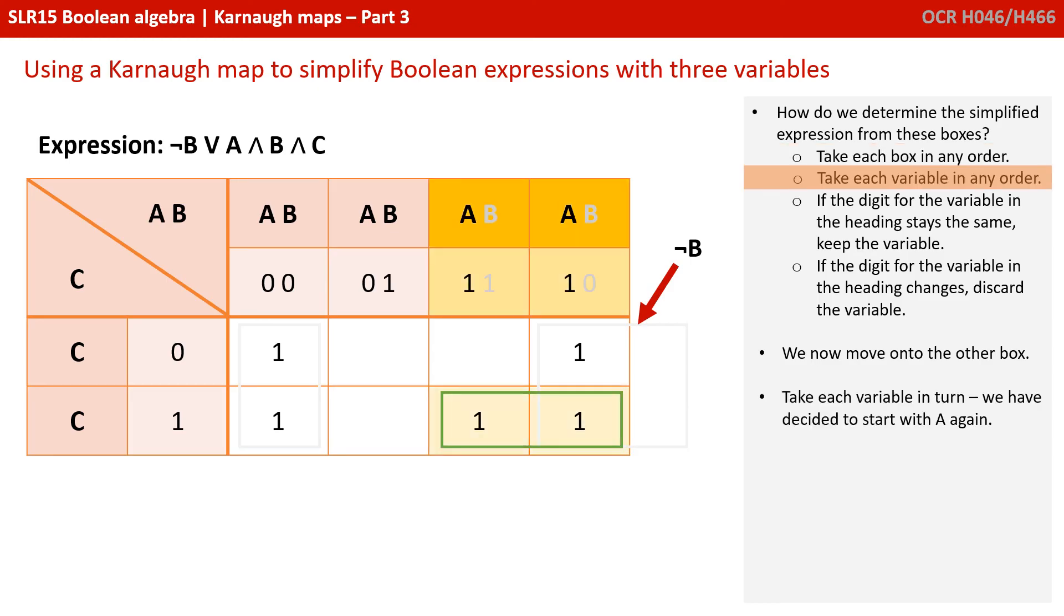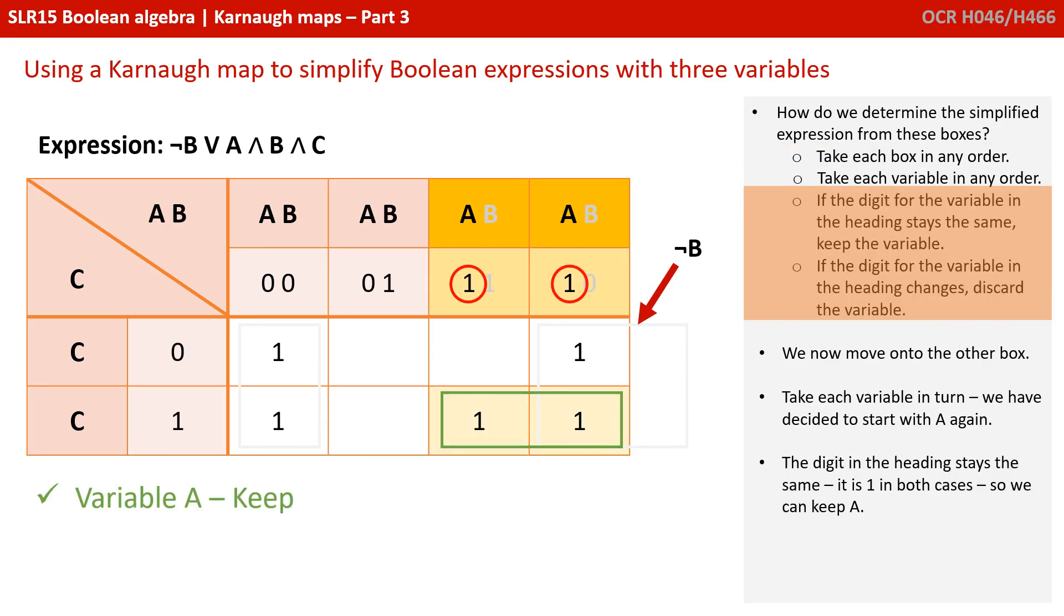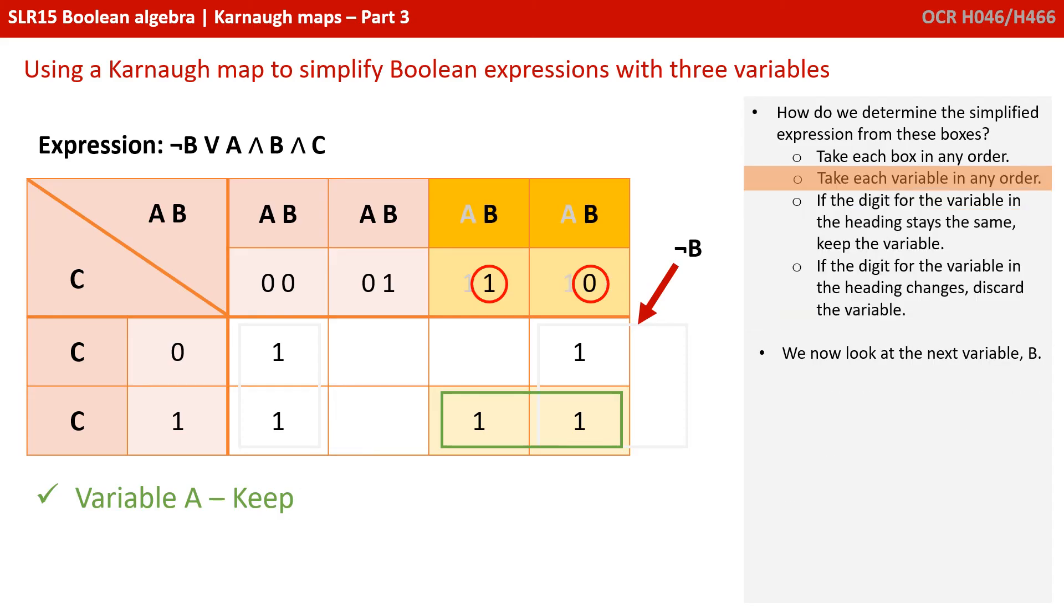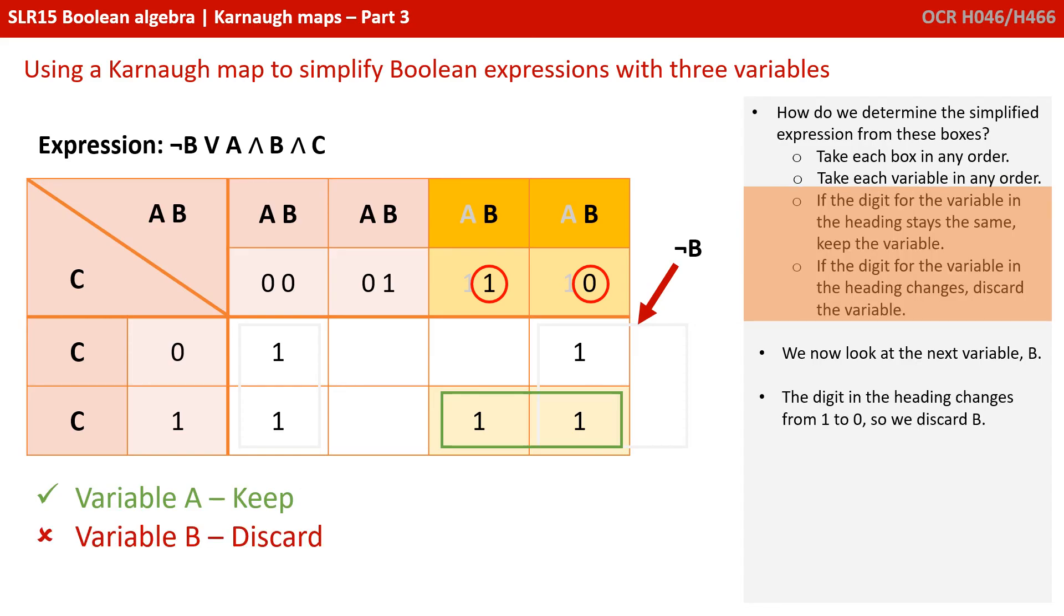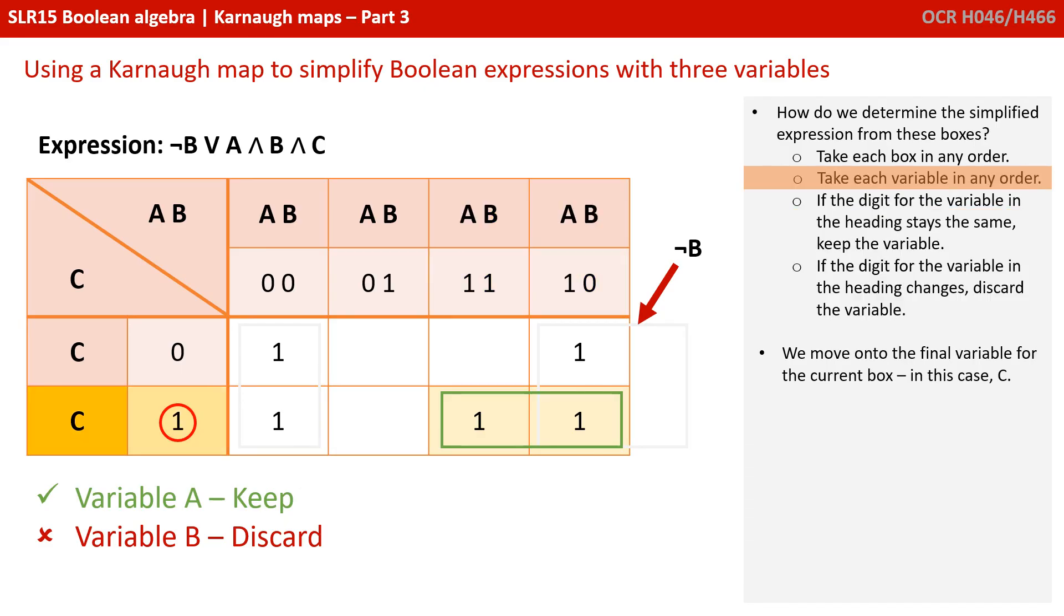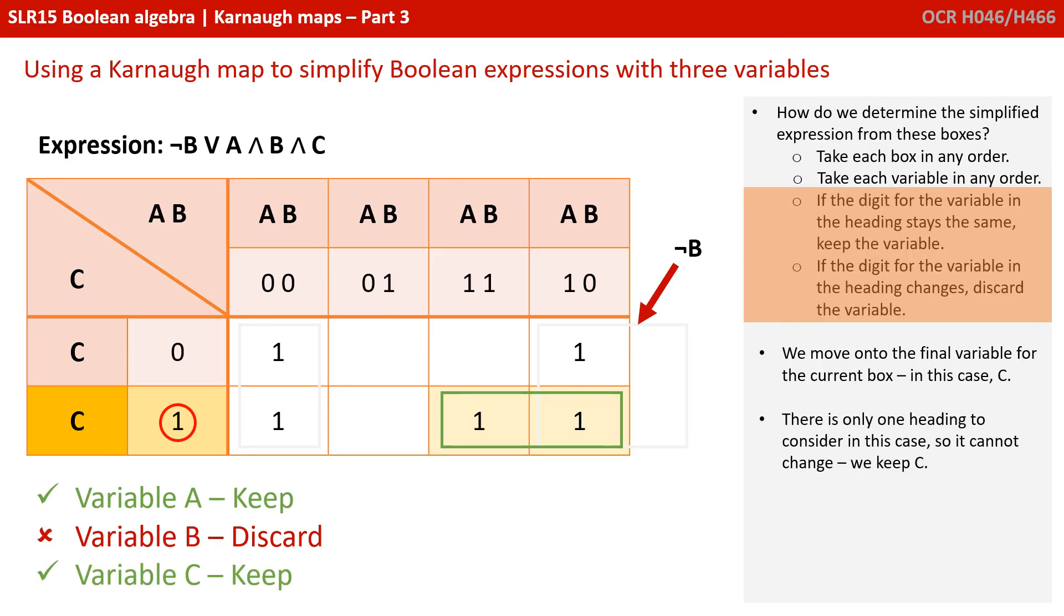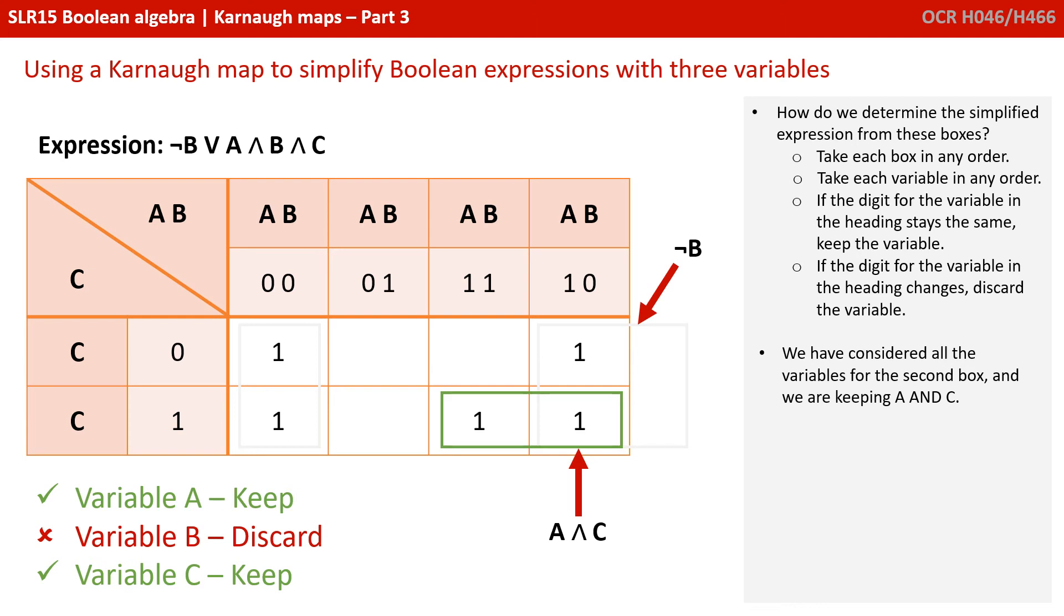Okay, move on to the other box. And let's consider A first. A is staying the same. There's a 1 in both the headings there. So we're going to keep variable A. Okay, let's now consider B. The digit in the heading changes from 1 to 0. So we're going to get rid and discard B. And we move on to the final variable for our current box, which is C. And there's only one heading to consider in this case. So it can't change. So we get to keep variable C. We've considered all the variables for the second box. So we're keeping A and C. This box is A AND C.